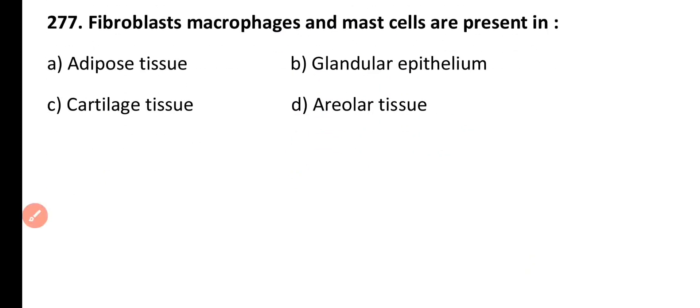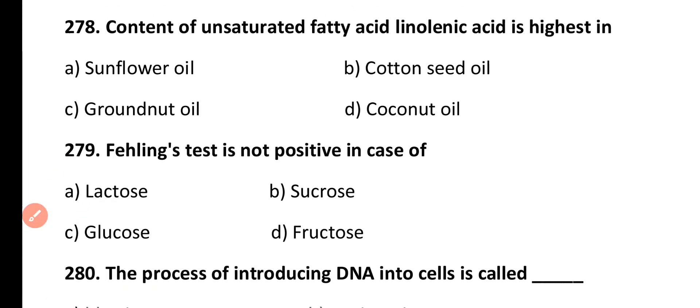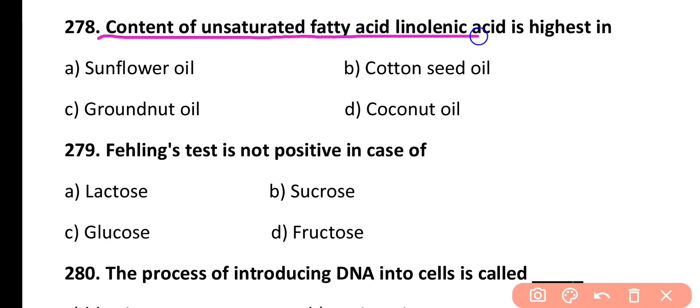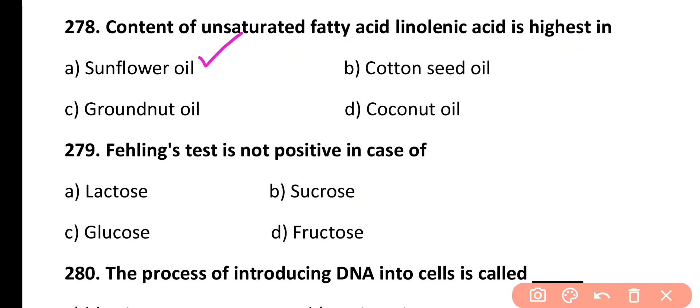Question 278. Content of unsaturated fatty acids — linolenic acid — is highest in: sunflower oil, cottonseed oil, groundnut oil, or coconut oil. Correct answer is Option A. Sunflower oil has the highest content of unsaturated fatty acids, including linolenic acid.